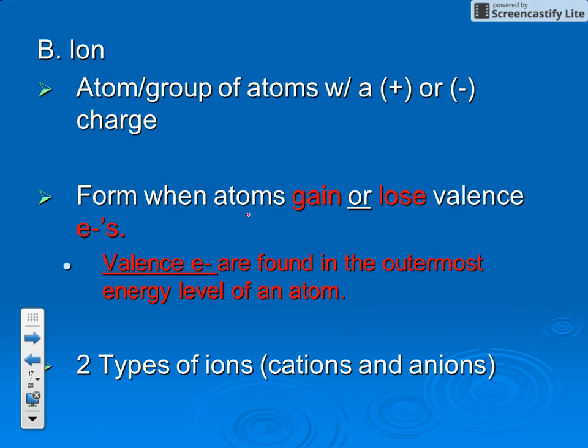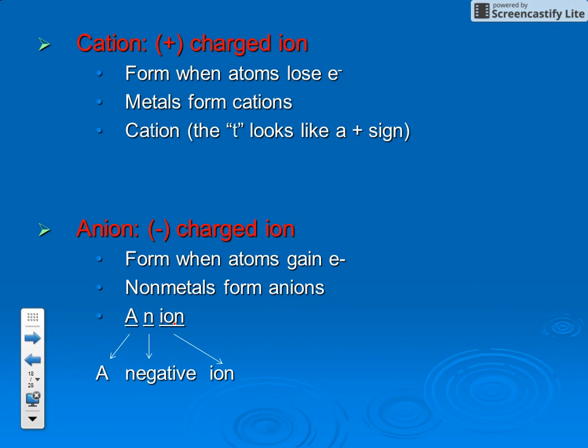An ion is defined as an atom or group of atoms that have either a positive or negative charge. An ion forms when an atom either gains or loses valence electrons. Valence electrons are the electrons found in the outermost energy level of an atom. They're on the outside and are the only ones that can be gained, lost, or shared.